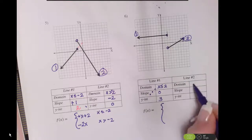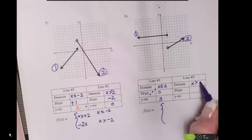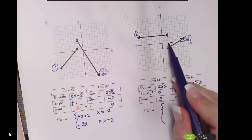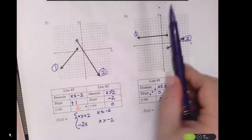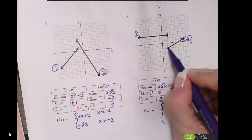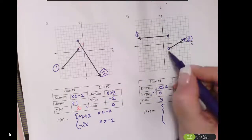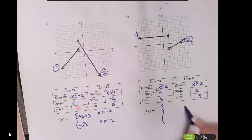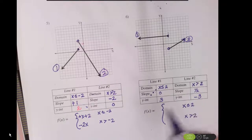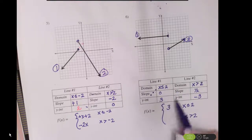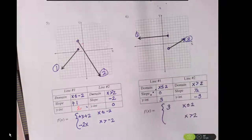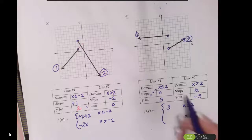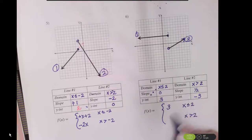In line number 2, my domain is everything greater than 2 — that's the neighborhood. The slope of that line is rise 1 and run 2, so that's a 1 half slope. And that line, if it were to continue and hit the y-axis, it would hit at negative 3. So my equation for this horizontal line is f of x equals 3, and for this line my equation is 1 half x minus 3.